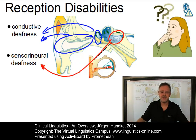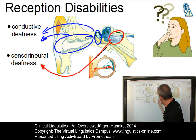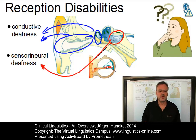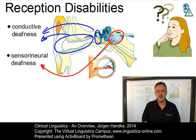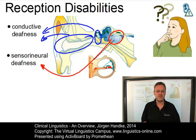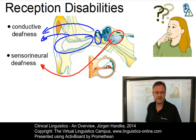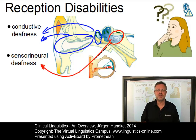Sensory neural deafness involves the hair cells, the organ of Corti, the nerve pathways to the brain — notably the auditory nerve — or the area of the brain that receives sound information. Sensory neural deafness is further divided into two types: sensory or cochlear deafness resulting from inner ear damage, and the much rarer neural deafness which is due to nerve disease, typically a tumour.